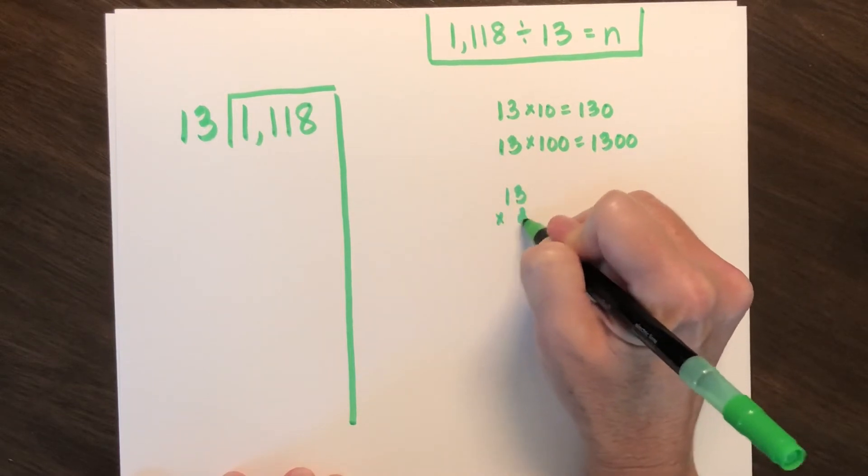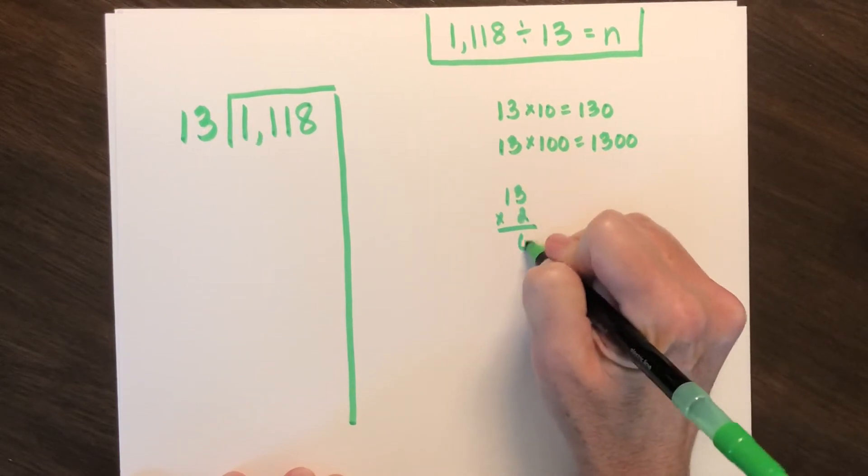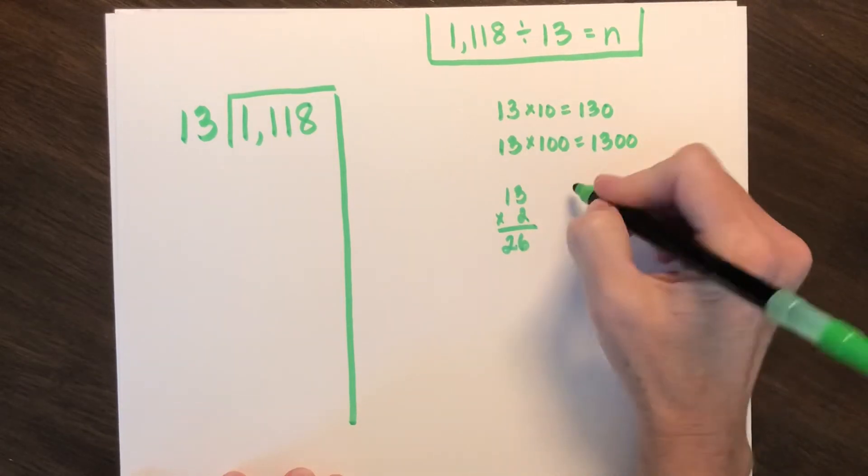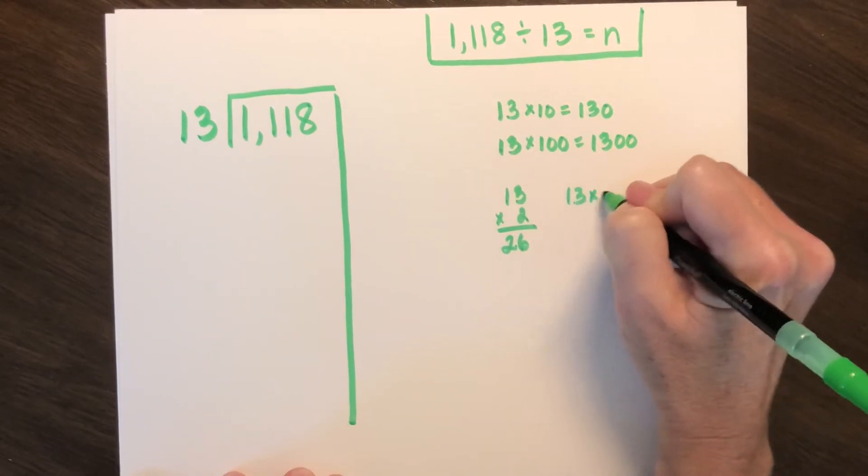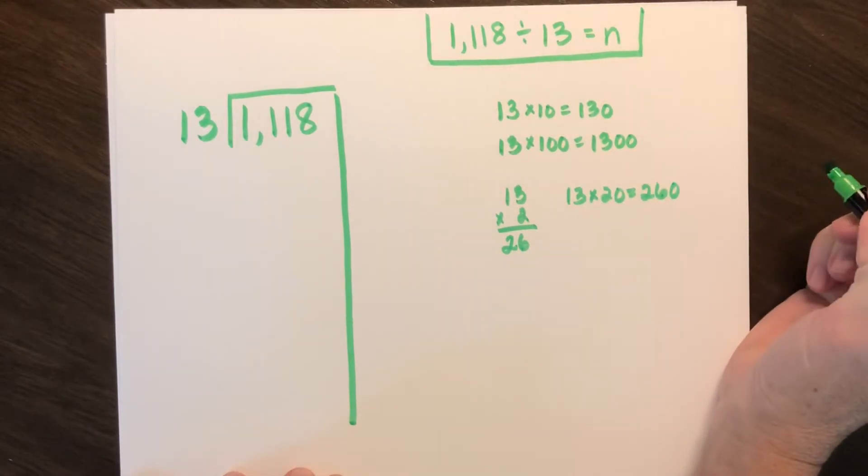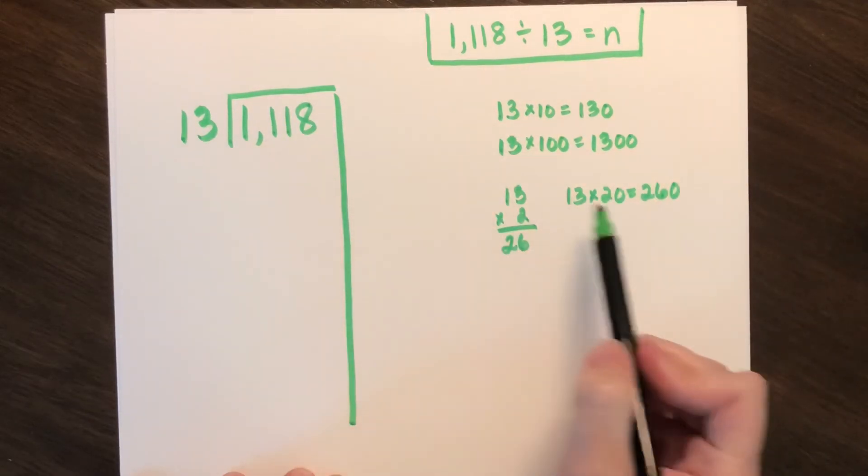I may want to consider times 2. 13 times 2 is 6 and 20, so 26. So 13 times 20 would be 260, and I would say we could have at least 20.